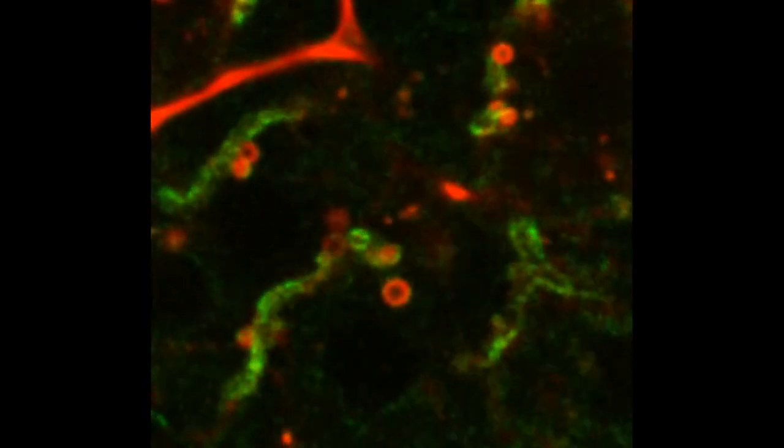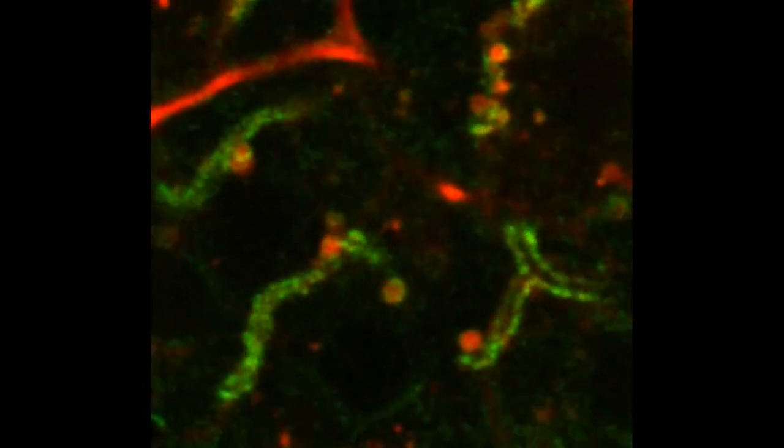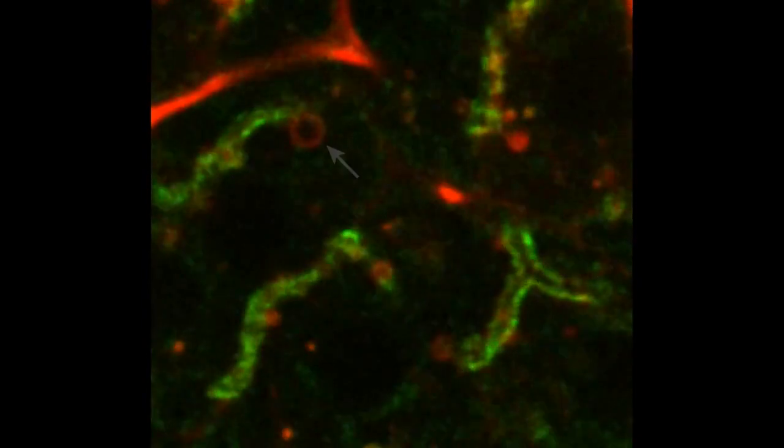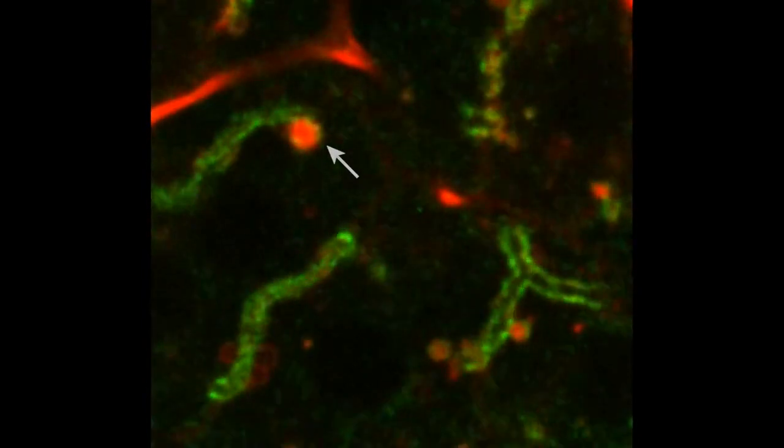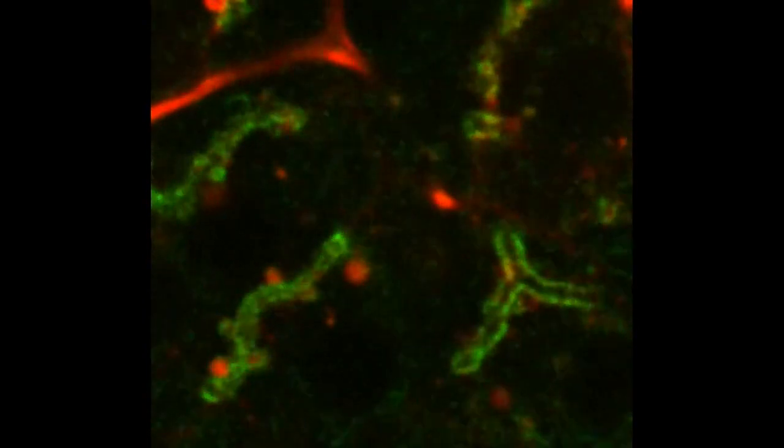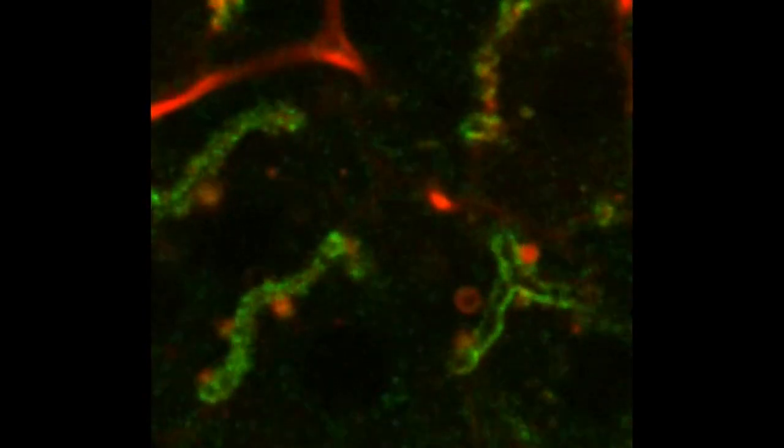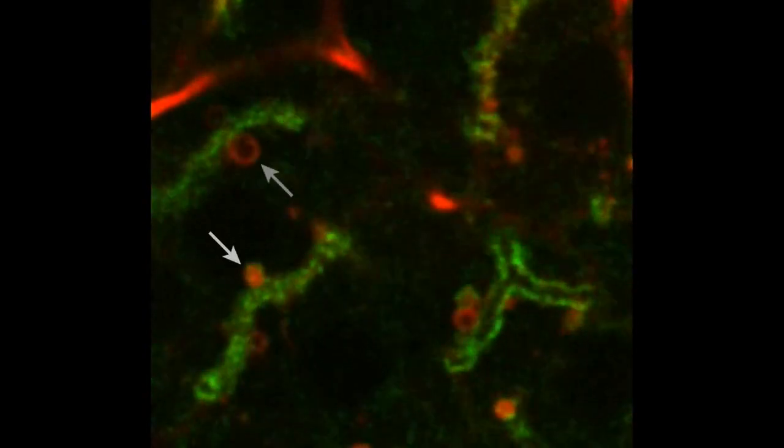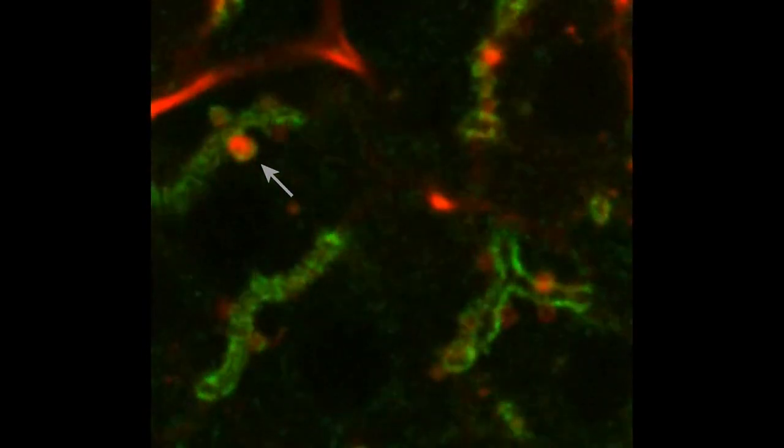We can also image how myosin-2 jumps on the granules after the actin filaments are assembled. In this video, we used a mouse that expresses fluorescent actin in red and fluorescent myosin-2 in green. The vesicles integrate into the plasma membrane after myosin-2 is recruited.